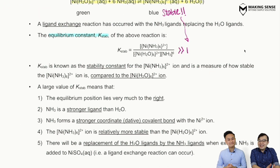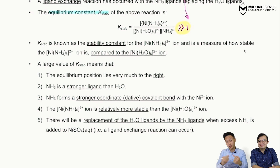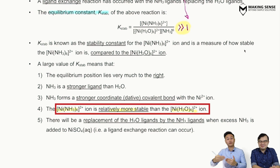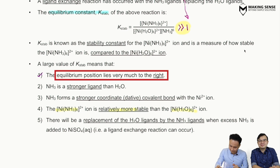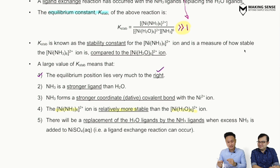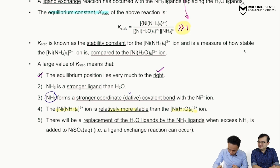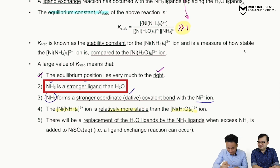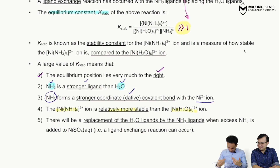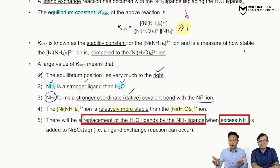What is the significance of a large Kstab value? First, Kstab much greater than one tells you the nickel–ammonia complex is far more stable than the aqua complex, so the position of equilibrium lies to the right. This also means the ammonia ligands form a stronger coordinate covalent bond with the Ni2+ ion compared to water ligands — ammonia is a stronger ligand than water. Therefore, adding excess ammonia will replace all water ligands with ammonia.